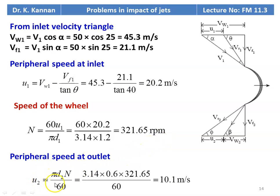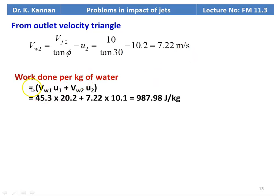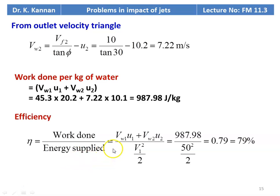The peripheral speed at the outlet U2 = pi × D2 × N / 60 = 3.14 × 0.6 × 321.65 / 60 = 10.1 m/s. From the outlet velocity triangle: Vw2 = Vf2 / tan(phi) − U2 = 10 / tan(30°) − 10.1 = 7.22 m/s. Work done = Vw1 × U1 + Vw2 × U2 = 45.3 × 20.2 + 7.22 × 10.1 = 987.98 J/kg. Efficiency = (Vw1 × U1 + Vw2 × U2) / (V1² / 2) = 987.98 / (50² / 2) = 0.79, which is 79%.